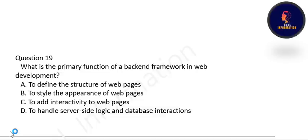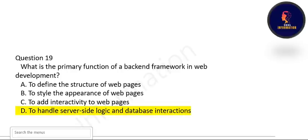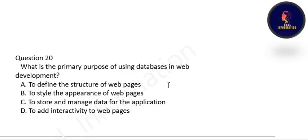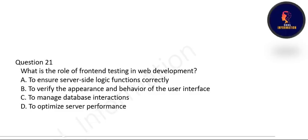What is the primary function of a back-end framework in web development? The primary function is to handle server-side logic and database interaction. Option D is correct. Next: what is the primary purpose of using a database in web development? The primary purpose is to store and manage data for applications. Option C is correct.